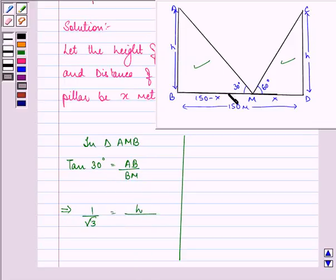This further implies H is equal to 150 minus X upon root 3. Let this be the first equation.